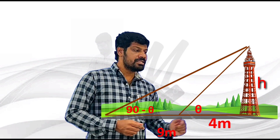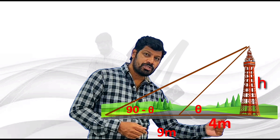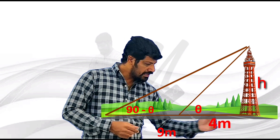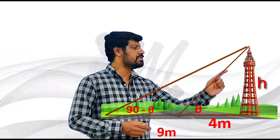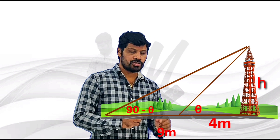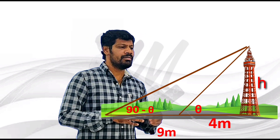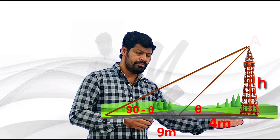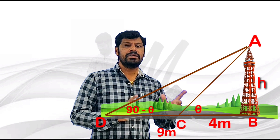So in the diagram: theta is one angle, 90 minus theta is the other. The given distances are 4 meters and 9 meters. The height of the tower is H. We will label the diagram points as A, B, C, D.